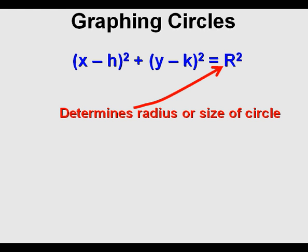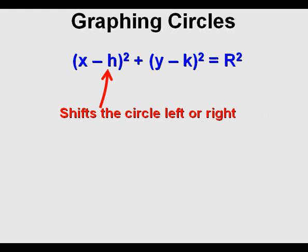H is the constant that shifts the circle left or right from the origin at X equals zero. And K is the constant that shifts the circle up or down from Y equals zero.